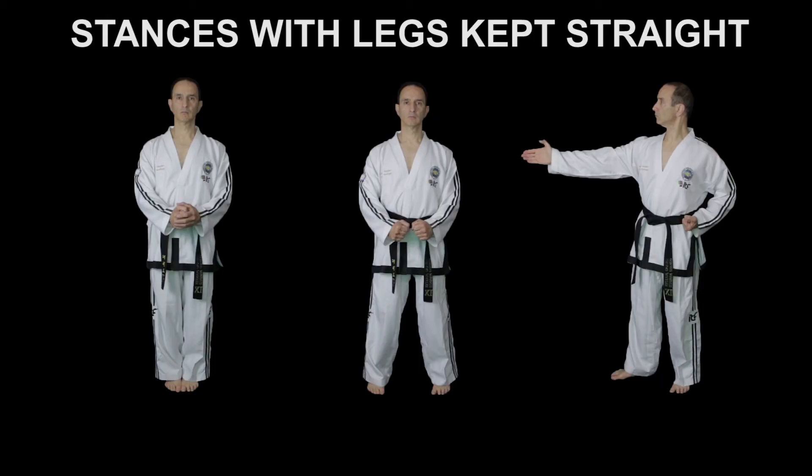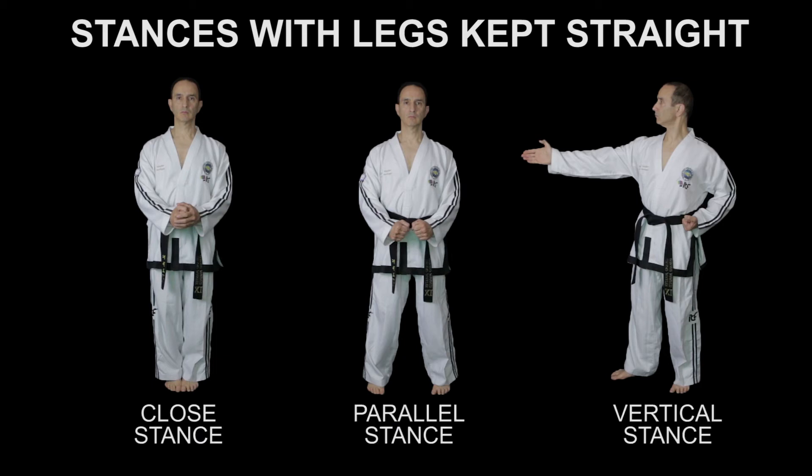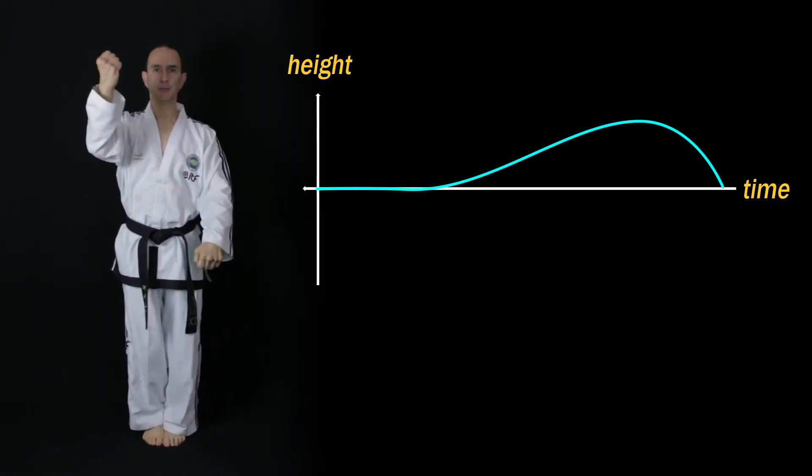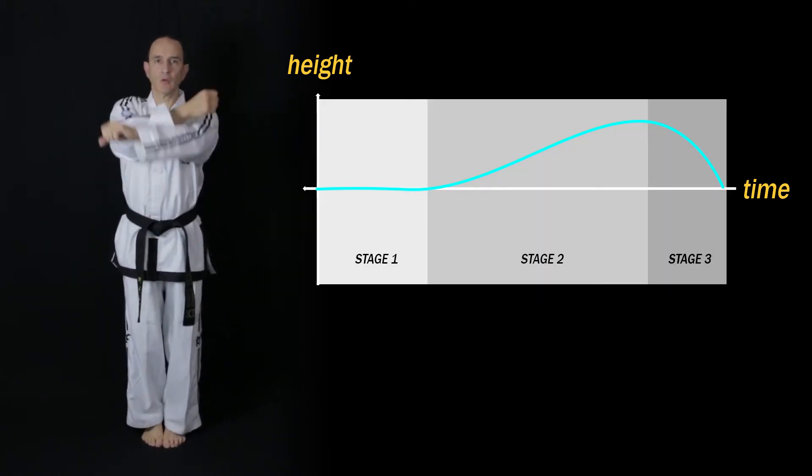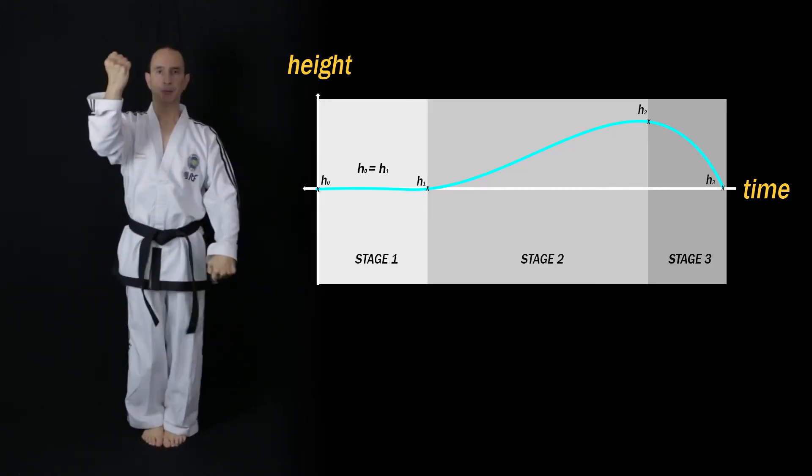If you're in a stance where the legs are kept straight such as closed stance, parallel stance, or vertical stance, and the technique is performed on the spot using the same stance, then you can relax and balance at the initial stage without bending the knees. So the shape of the sine wave motion curve will be like this. There's no dropping of the body during stage 1, and the value of H0 will be equal to H1.